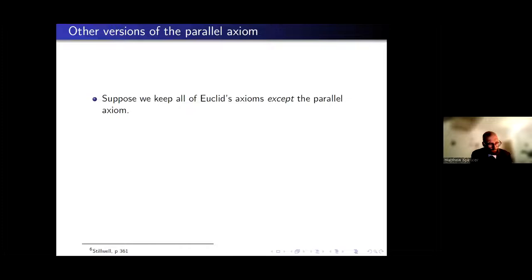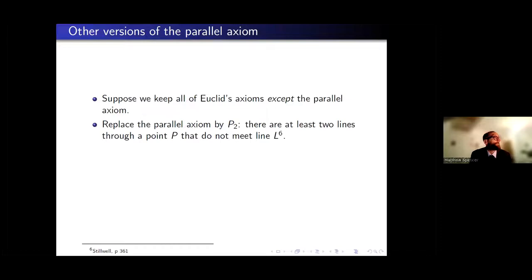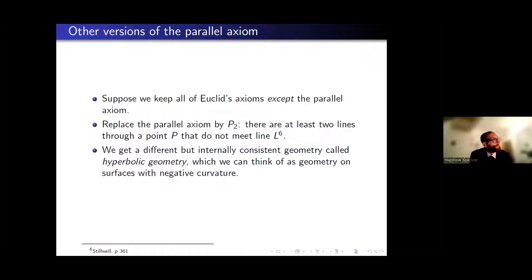For a long time, there were unresolved questions about Euclid's axioms — specifically, it was suspected that the parallel axiom might be a theorem provable from the other four. The most well-developed attempts took an alternative axiom — at least two lines through a point that don't meet the given line — and tried to derive a contradiction. But all attempts to find a contradiction were unsuccessful. Instead, we get something different: combining that alternative axiom with the other four from Euclid gives us hyperbolic geometry.